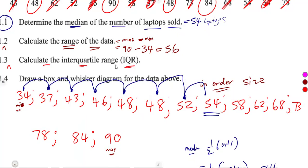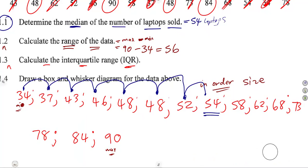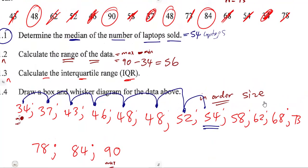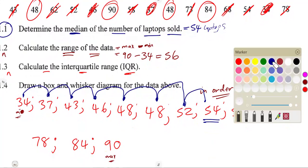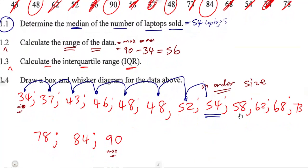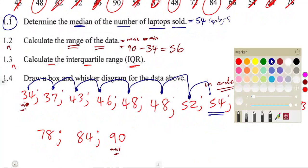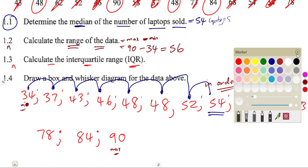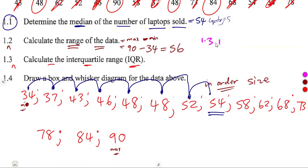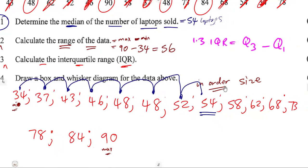Question 1.3: calculate the interquartile range. There is no way to determine the interquartile range without the quartiles first. Remember, the interquartile range equals the upper quartile (Q3) minus the lower quartile (Q1), so we must find those first.